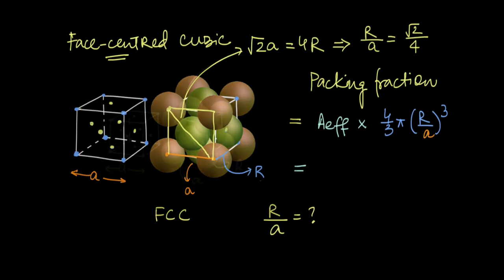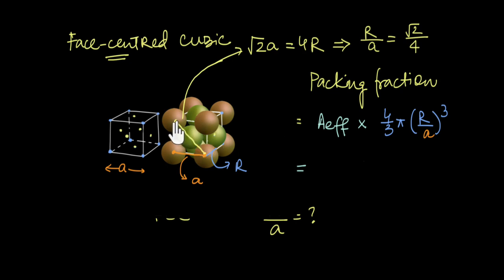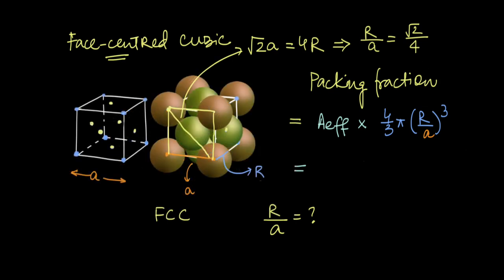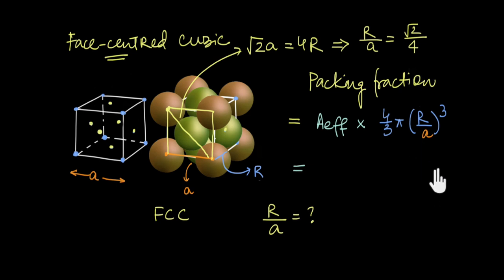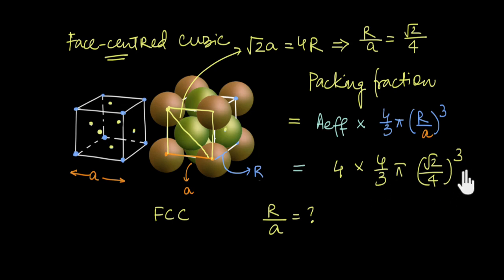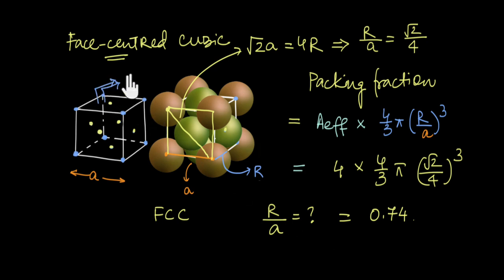It doesn't matter if atoms are big or small — as long as they form FCC, the atoms along the face diagonal will always touch, making that distance always 4r = √2·a. For the packing fraction, Z_effective = 4, r/a = √2/4, so it's 4 × (4/3)π × (√2/4)³, giving a packing fraction of 0.74. Arranging atoms in FCC leads to 74% packing efficiency, with only one-fourth left as gaps.